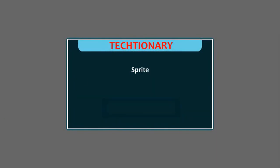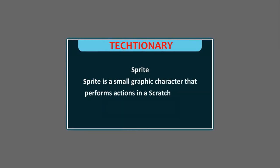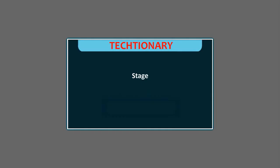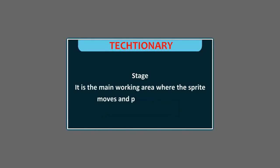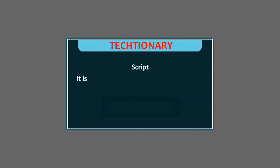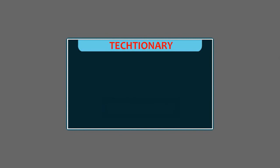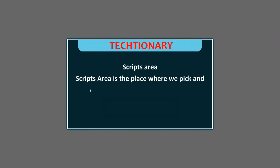Dictionary: Sprite — a small graphic character that performs actions in a Scratch project. Stage — the main working area where the sprite moves and performs actions. Script — the collection of stepwise instructions given to a sprite. Scripts area — the place where we pick and drop the blocks to create a script.